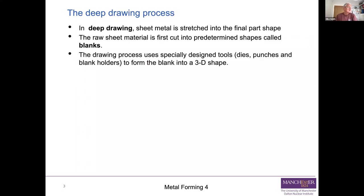The drawing process itself uses specially designed tools, generally called dies, punches, and blank holders, to allow us to form the blank, which is flat, into a three-dimensional shape - like a beer can, for instance. That's a classic deep drawn metal component.